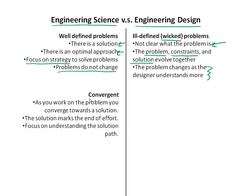The problem changes as the designer understands more. In engineering design problems, the more you understand and immerse yourself in the problem, the more you're going to see the problem you're solving actually changes. This is kind of frightening — how can we solve a problem if it's constantly changing? In engineering science, the process is convergent: as you work on a problem, you converge toward a solution. Once you get the right strategy down, you work closer and closer to the solution. When you get to the solution, you're done — you say, I solved this problem, I know how to do this now.